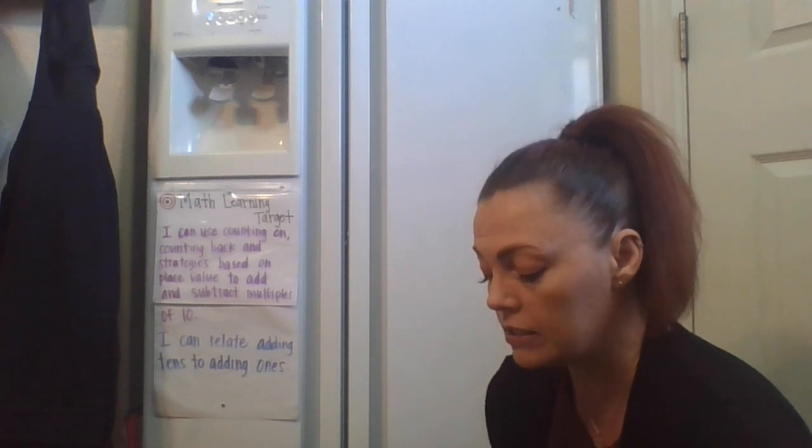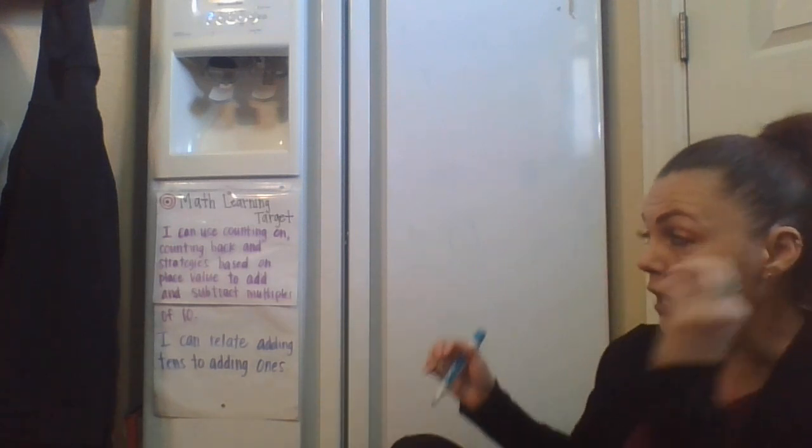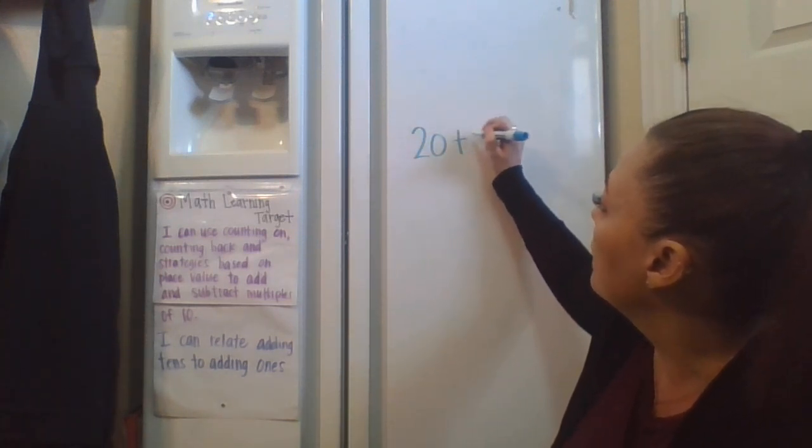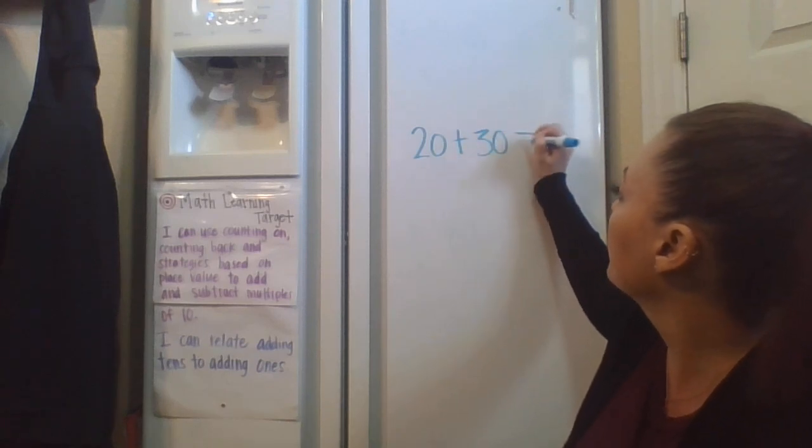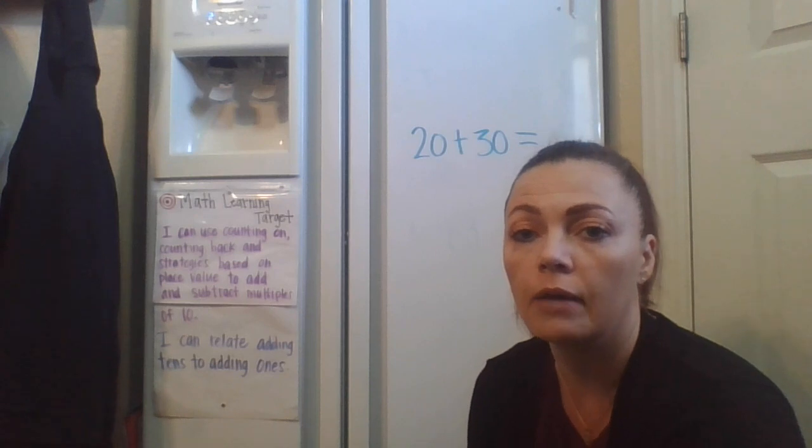So let's take a look. These are the types of things that you're going to see in your book. So let's take a look and see what those are. So if I had a problem that looked like this, 20 plus 30.